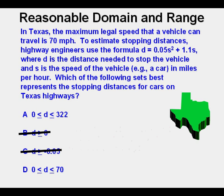The first thing we need to do is think a little bit. What's the lowest stopping distance possible? It has to be 0. So in interval notation, 0 is going to be at the lower end which eliminates answers B and C.